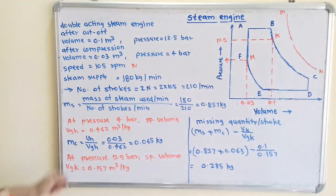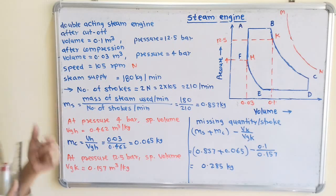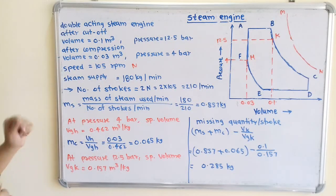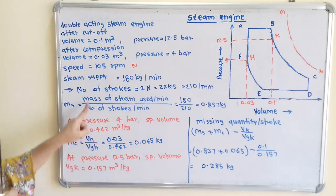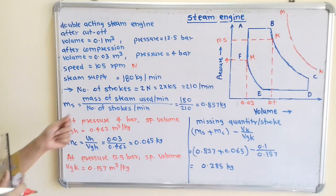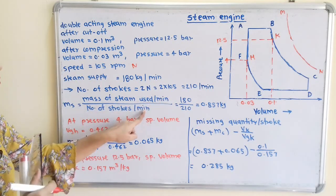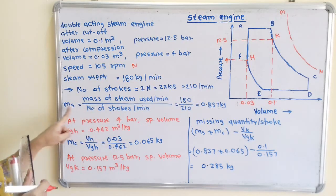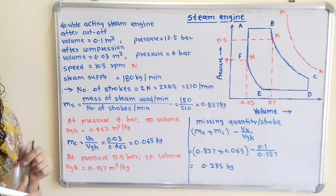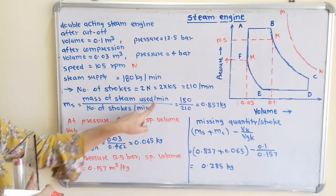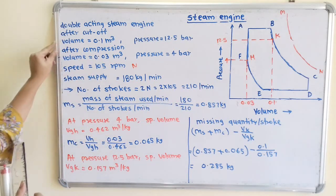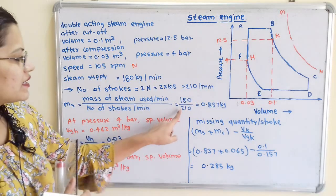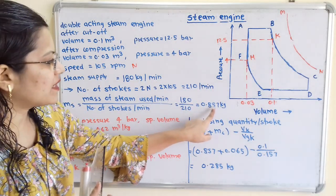Mass of steam used per stroke ms equals mass of steam used per minute divided by number of strokes per minute. The time duration must be the same for both — both are per minute here. So ms equals 180 divided by 210, which equals 0.857 kg per stroke.